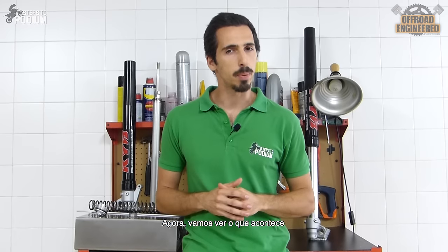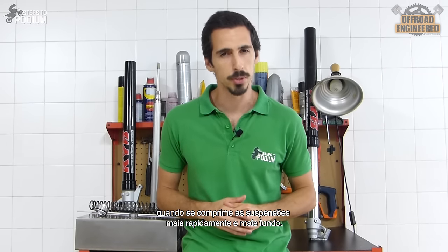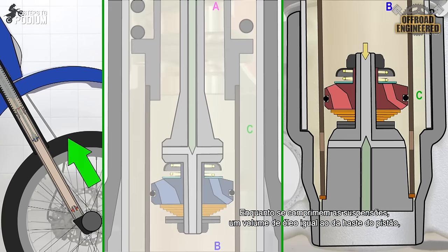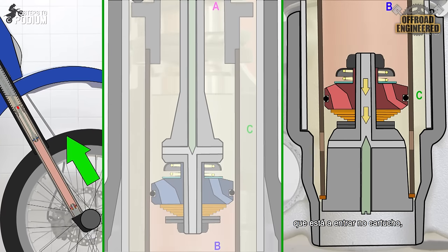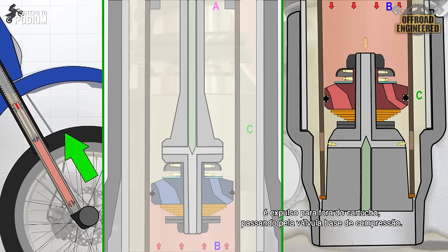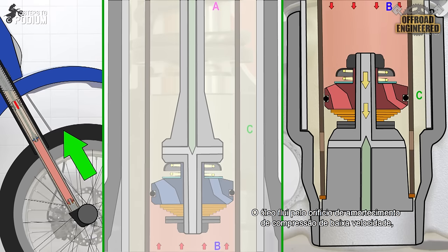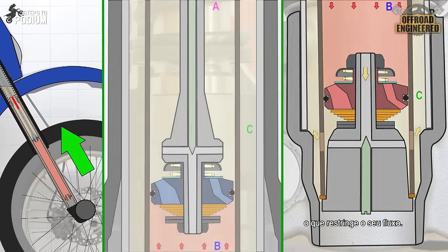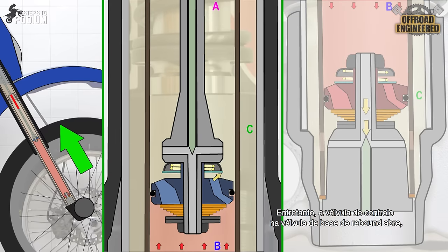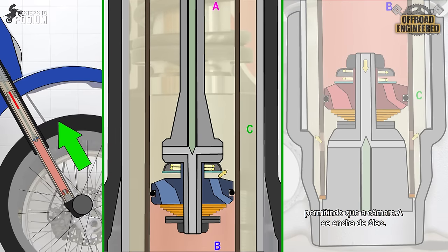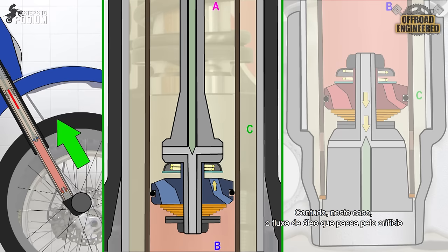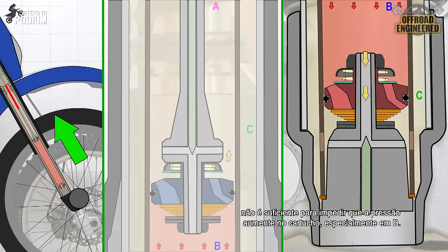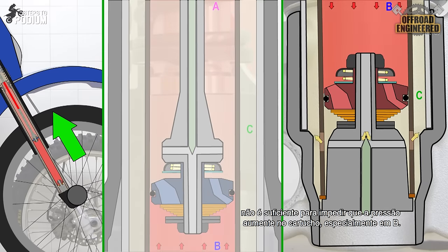Let's see what happens when you compress the forks faster and deeper into the stroke. While you're compressing, the same volume of oil as the volume of the piston rod entering the cartridge is pushed through the compression base valve. The oil is forced to flow through the low-speed compression orifice, restricting the oil's flow. The check valve in the rebound base valve opens, allowing chamber A to get filled with oil. However, there is not enough oil going through the low-speed compression orifice to prevent the oil pressure to build in the cartridge, especially in chamber B.